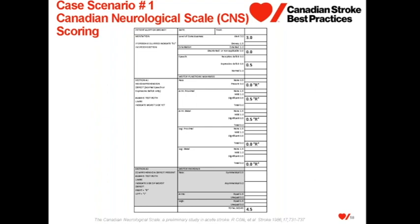For motor scoring of case 1: patient had right-sided facial weakness, significant weakness in the proximal arm — able to have movement but not full range — and the distal arm also scored significant, so receiving 0.5 on the right. The right proximal and distal leg had no spontaneous movement, so received a score of total for both the proximal leg and the distal leg. The total Canadian Neurological Scale score for this patient is 4.5.